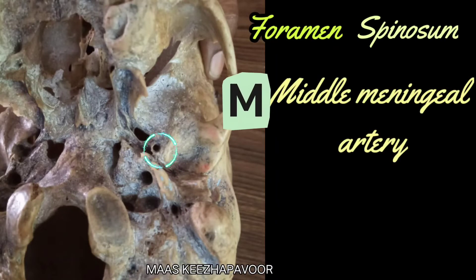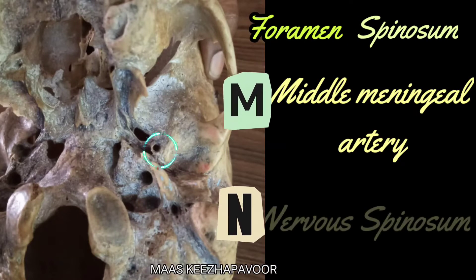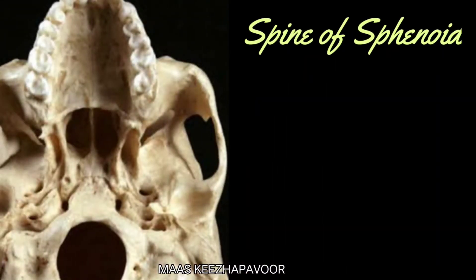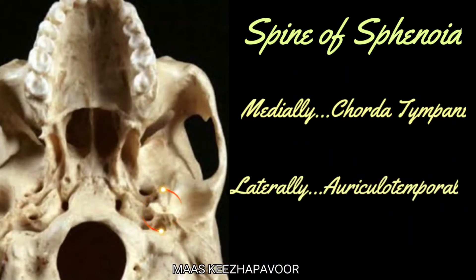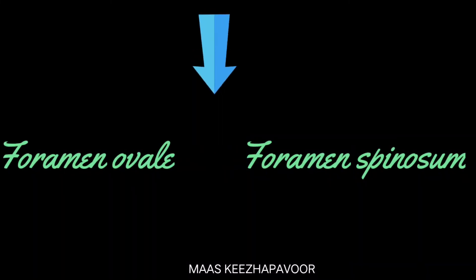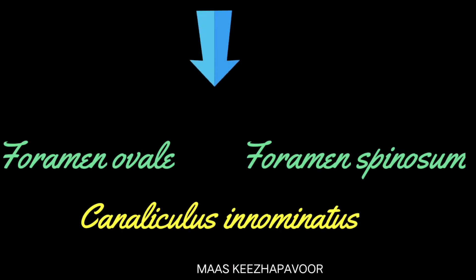Through foramen spinosum, the middle meningeal artery and nervus spinosum pass. The spine of sphenoid is medially related to the chorda tympani nerve and laterally related to the auriculotemporal nerve. Sometimes, an unusual foramen may be present between foramen ovale and spinosum, called canaliculus innominatus, which transmits the lesser petrosal nerve.